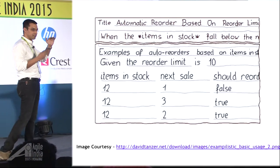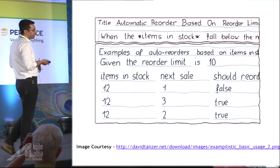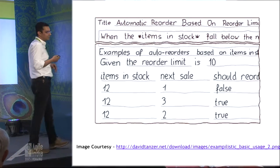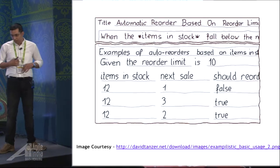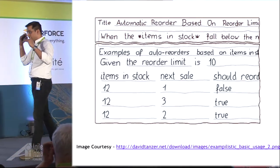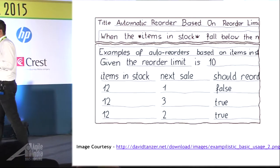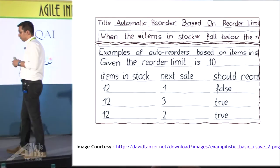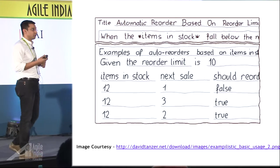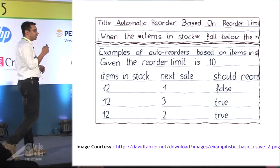Another version could apply in an e-commerce portal where you want to set the reorder limit based on your product vertical. For books it could be different; for mobile phones, which require a longer reorder period, you might put the limit even higher. So again, it takes away the ambiguity.